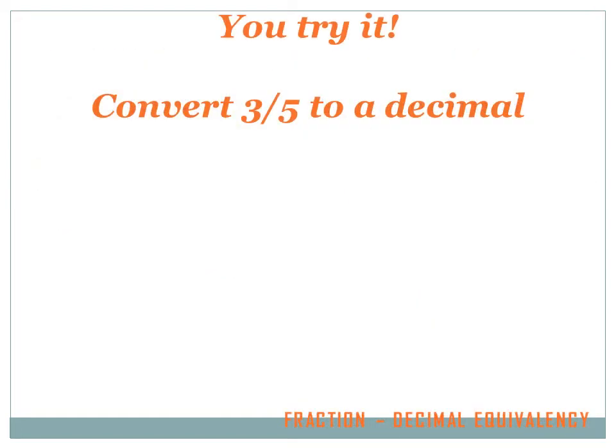Now you try it. Convert three-fifths to a decimal. You may want to hit your pause button to give yourself time to work the problem out. Get a piece of paper and a pencil and do the math, and when you get done, hit the forward button to move on to the next slide. That was easy. Three-fifths converted to a decimal. All I do is divide the three by five, and I get .6. So three-fifths equals .6.